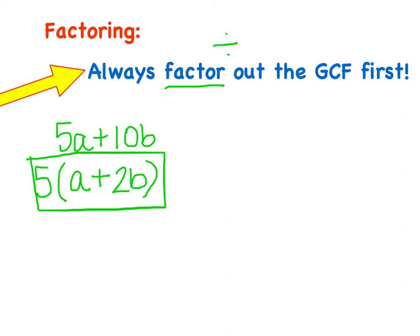One way you can check your work when factoring out the GCF is to go back through and distribute your answer. So I'm going to rewrite my answer: 5 times (a plus 2b). If I were to distribute the 5 to the a, I would be left with 5a. And if I were to distribute the 5 to 2b, meaning multiply, that would be 10b. And we can see here that we get exactly what we started with.